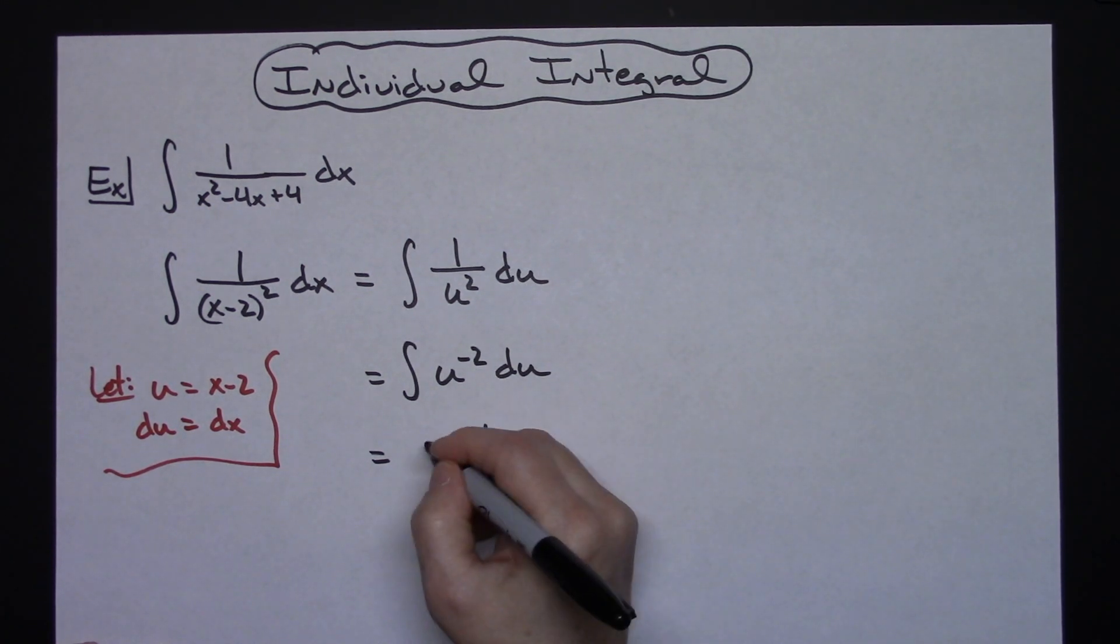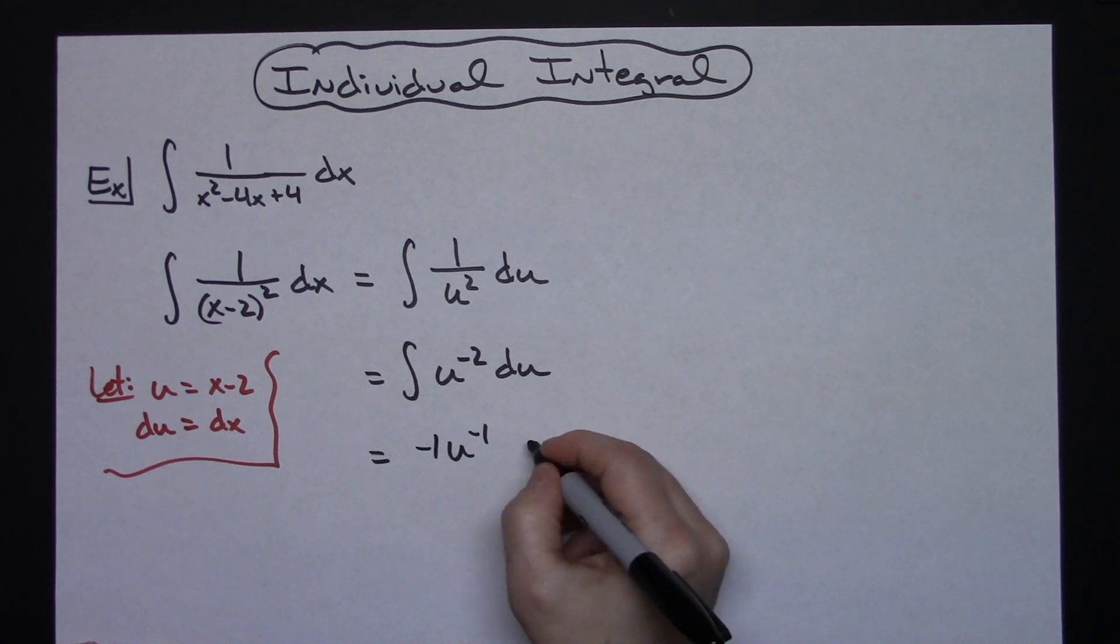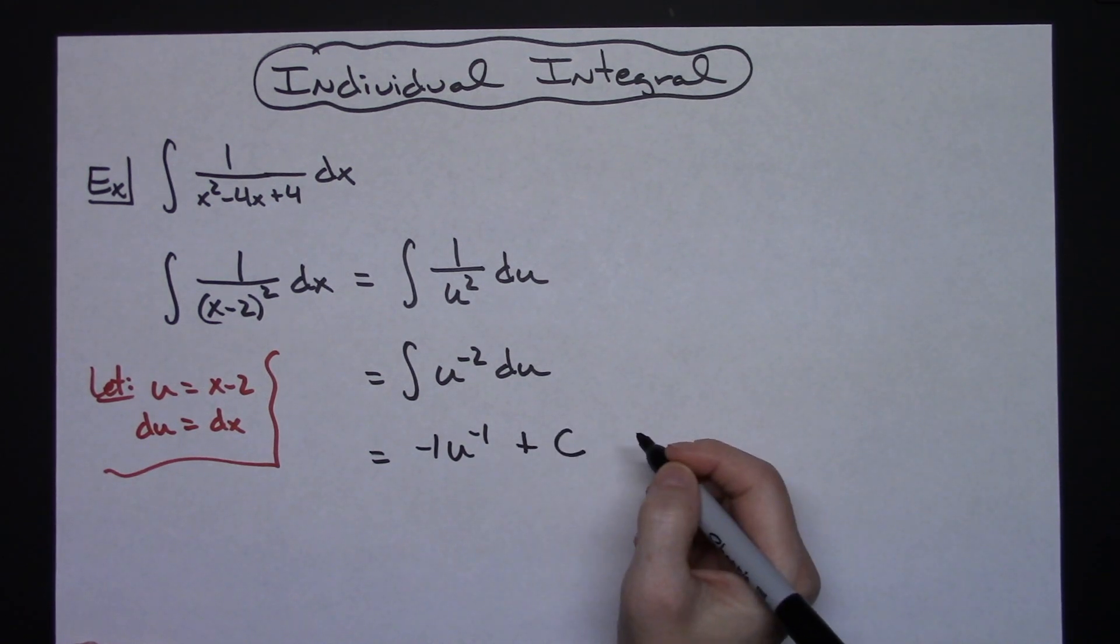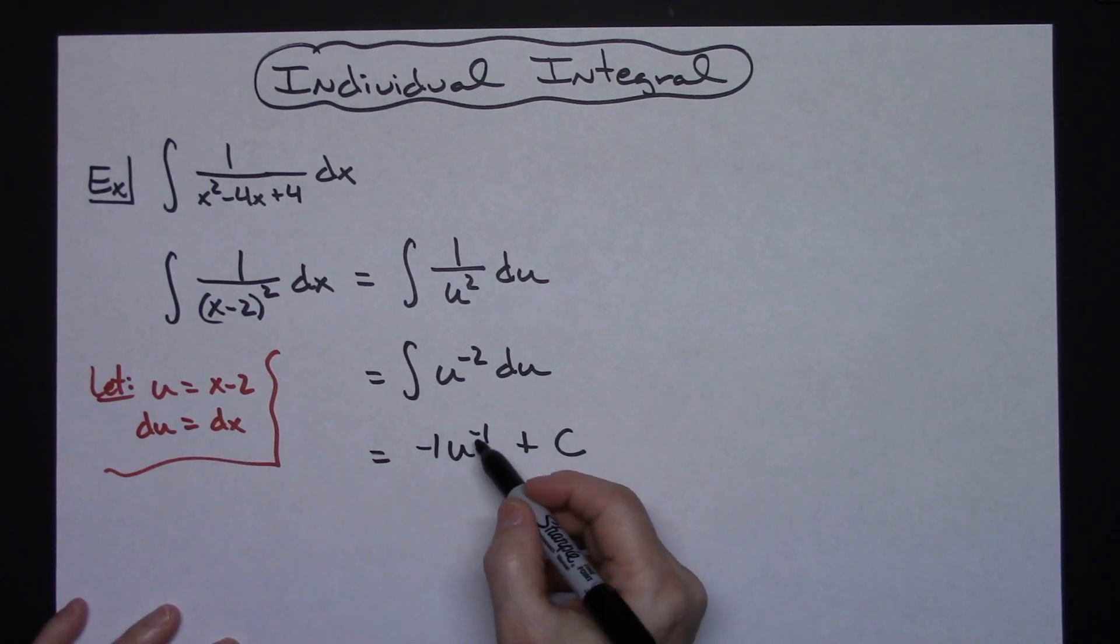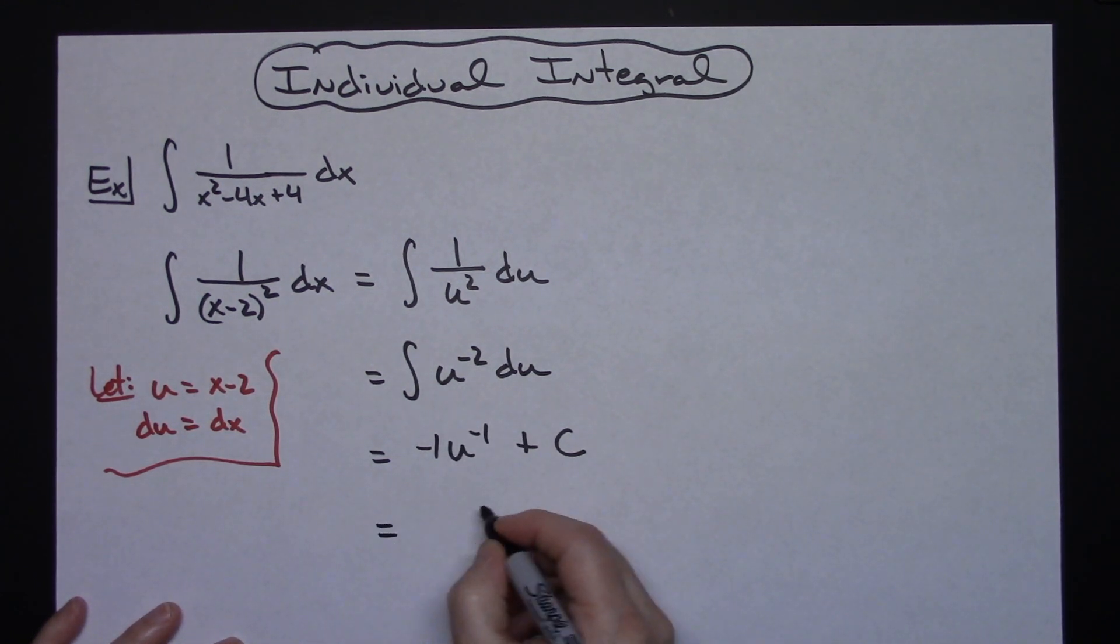That's u to the negative 1, with a negative 1 in front, plus C. The last step is cleaning it up: replace u with what I originally said it was, x minus 2. Moving it to the denominator gives us a final answer of negative 1 over (x minus 2) plus C.